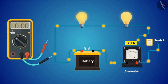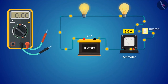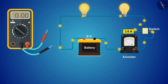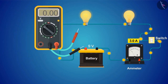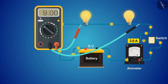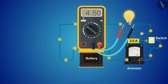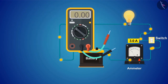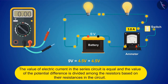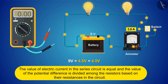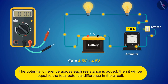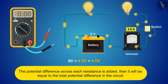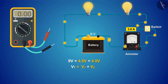Let us use a multimeter to measure the potential difference. A multimeter is a device used to find the value of many electrical quantities; here it will act as a voltmeter. If we put the multimeter at the battery terminals, we get 9 volts. From this activity, it can be concluded: the value of electric current in the series circuit is equal throughout, and the value of the potential difference is divided among the resistors. If the potential difference across each resistance is added, it will be equal to the total potential difference in the circuit.